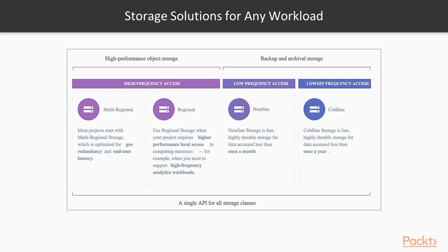For data that we don't need to access every day, we have Nearline storage, which is fast, highly durable storage for data we don't access more than once a month. Coldline storage is the cheapest of the bunch — it's for data that you want to archive and access once or less than once a year.